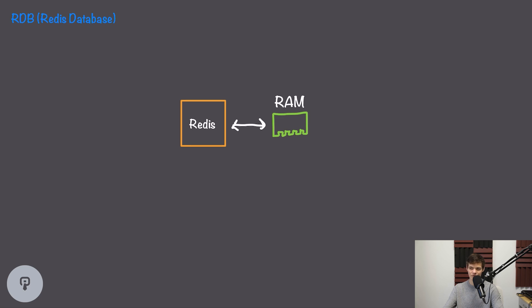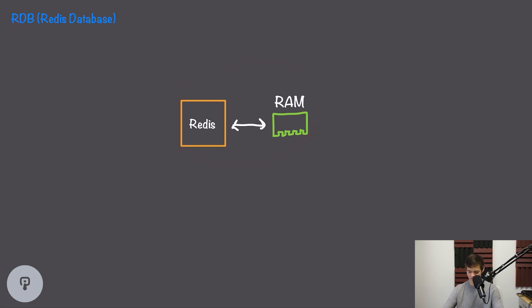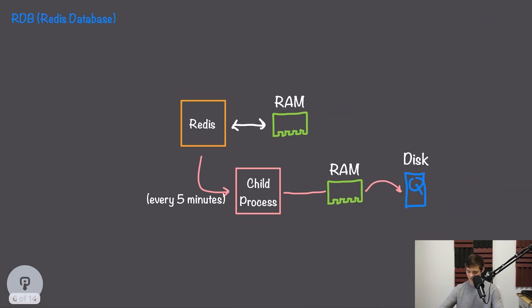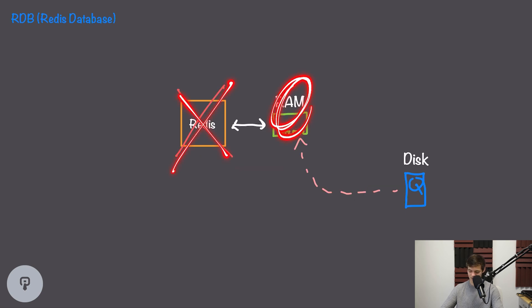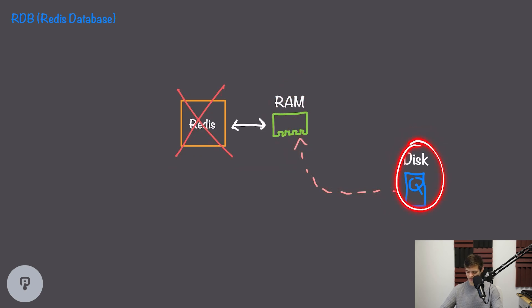Let's take a look at persistence, enabling Redis to perform even wider use cases by storing data on disk. The first and simplest way is called RDB, or Redis Database. Redis exclusively stores its data in memory, and what RDB does is every, say, five minutes, it forks the Redis process, creating a child process with the same data in memory, and that child process dumps the data from memory onto disk. This creates a backup of the in-memory Redis database every five minutes, so if the server fails, we can restore the latest RDB snapshot. For some use cases, this is certainly enough.